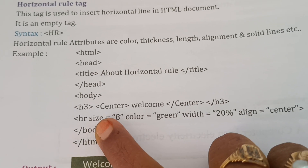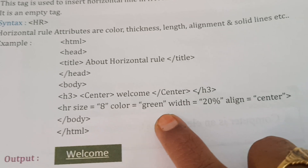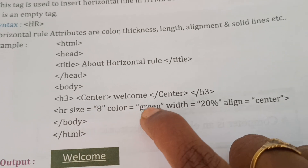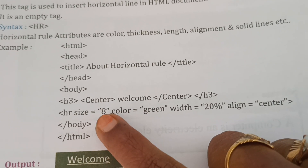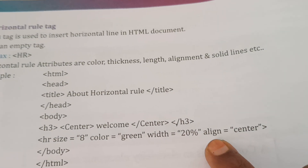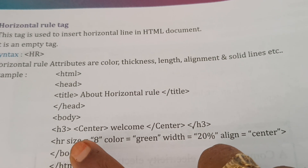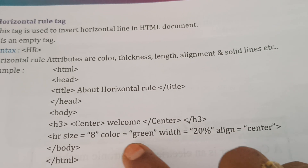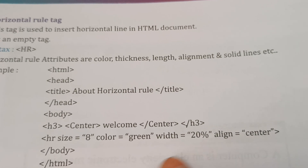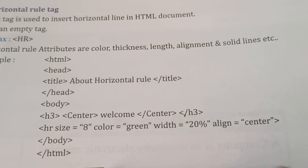Closed. HR means Horizontal Rule. Size is 8, Color is green, Width is 20%, Alignment is center. HR horizontal rule: Size is 8, Color green, Width 20%, Align center. Next: Body closing bracket, HTML closing bracket.